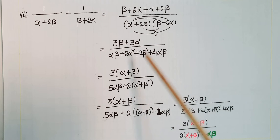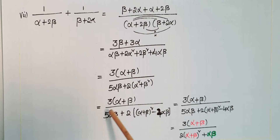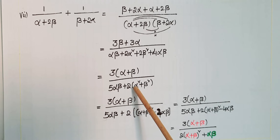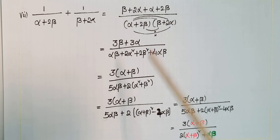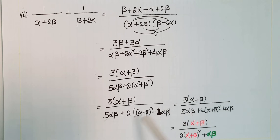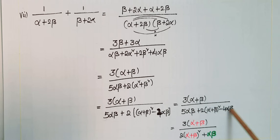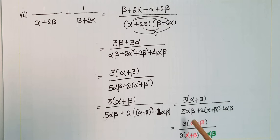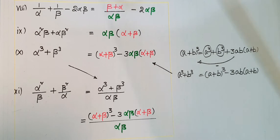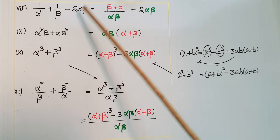Factoring the numerator: 3 is common, so 3(alpha plus beta). In the denominator: 5·alpha·beta plus 2(alpha² plus beta²). Since alpha² plus beta² equals (alpha+beta)² minus 2·alpha·beta, substituting: 5·alpha·beta plus 2·[(alpha+beta)² minus 2·alpha·beta] equals 5·alpha·beta plus 2(alpha+beta)² minus 4·alpha·beta equals alpha·beta plus 2(alpha+beta)². So the result is 3(alpha+beta) divided by [2(alpha+beta)² plus alpha·beta].